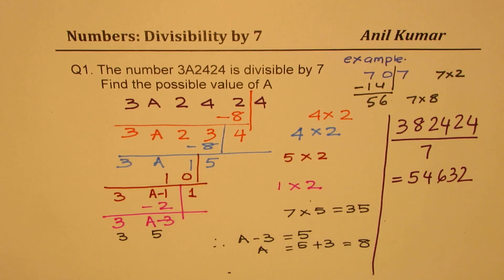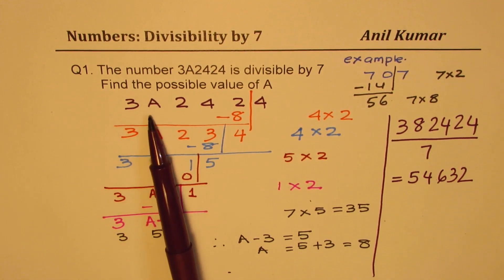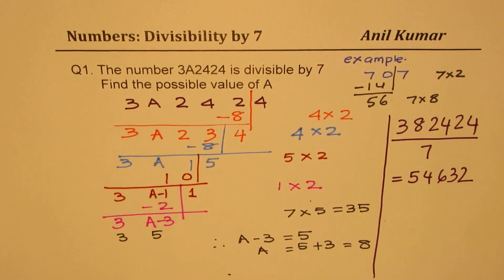So that is how we can actually find missing number or unknown number if the whole number is divisible by, in this case, 7. So I hope you understand and appreciate the trick.